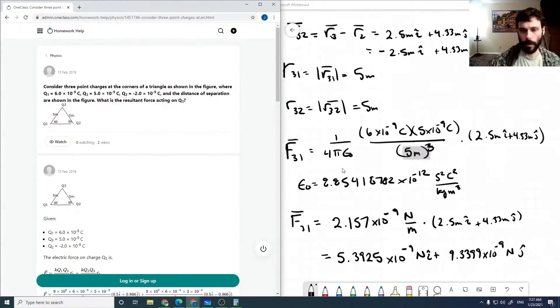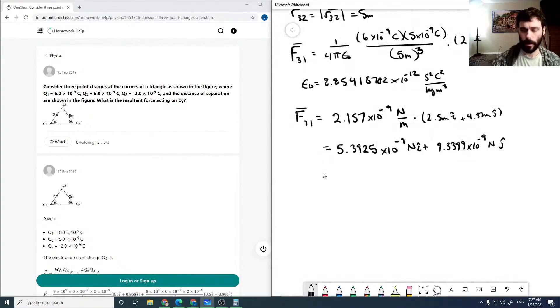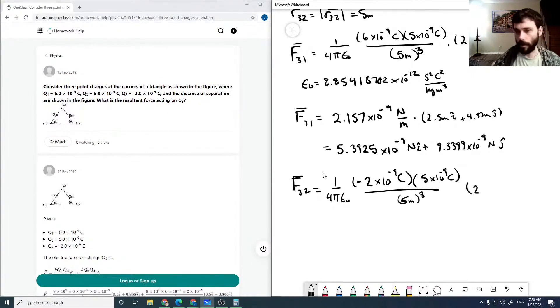That's our F31. F32 is 1 over 4 pi epsilon naught, our charge on 2, minus 2 times 10 to the minus 9 coulombs, times 5 times 10 to the minus 9 coulombs, over 5 meters cubed, times minus 2.5 meters plus 4.33 meters j hat.